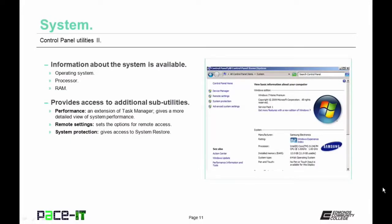The System utility is another important one for the technician — from here you can find information about the operating system, processor, and amount of RAM. It also gives access to additional applets like Performance (an extension of Task Manager giving a more detailed view of system performance), Remote Settings (for setting remote access options), and System Protection (which allows for system restore).